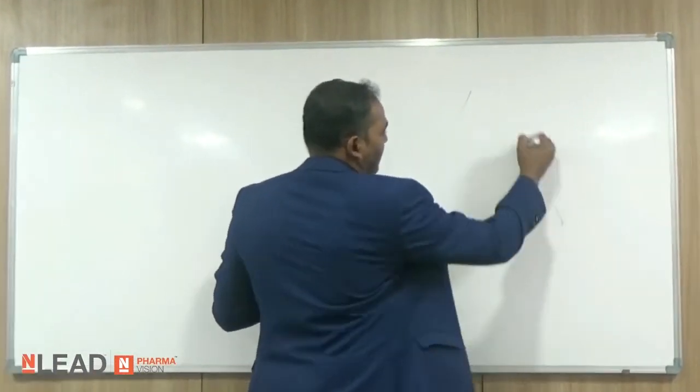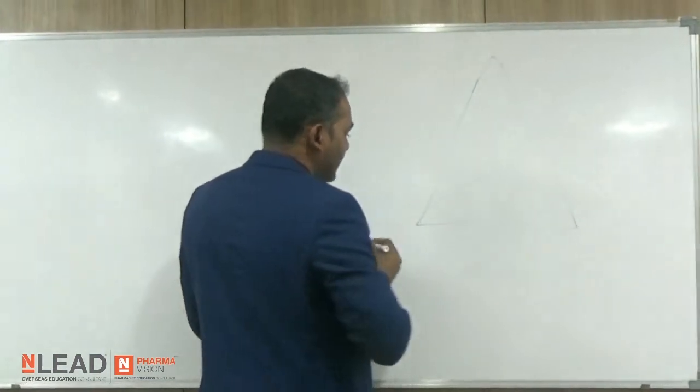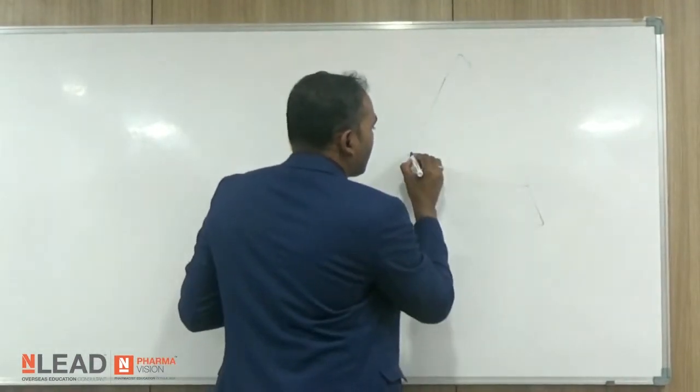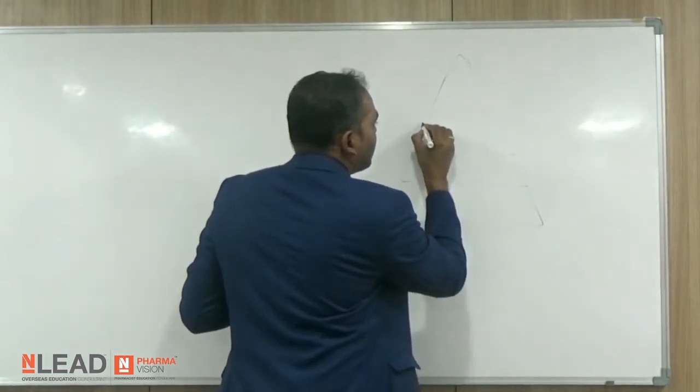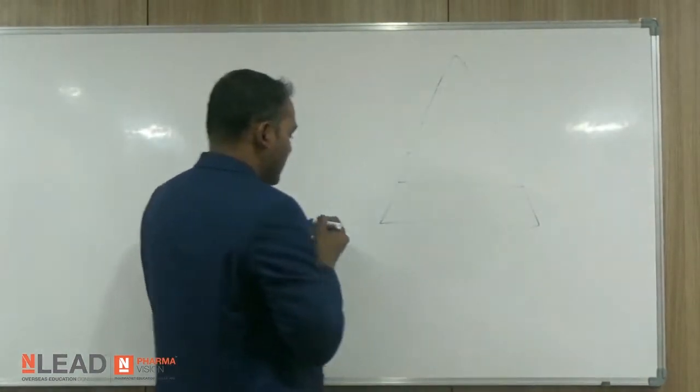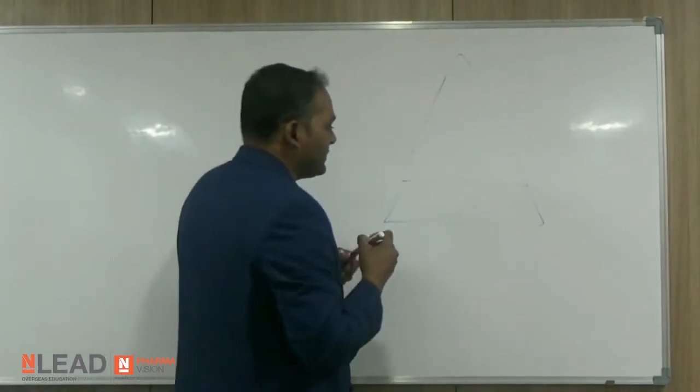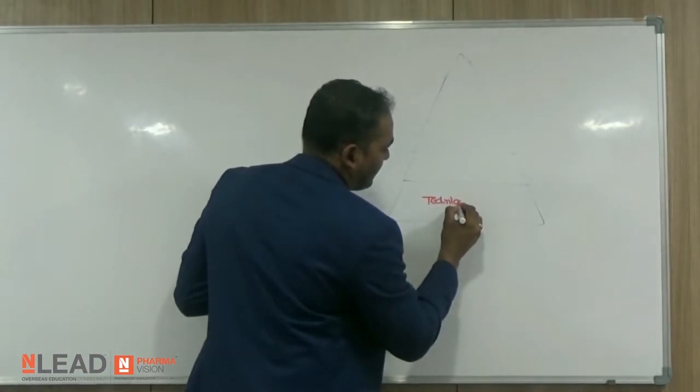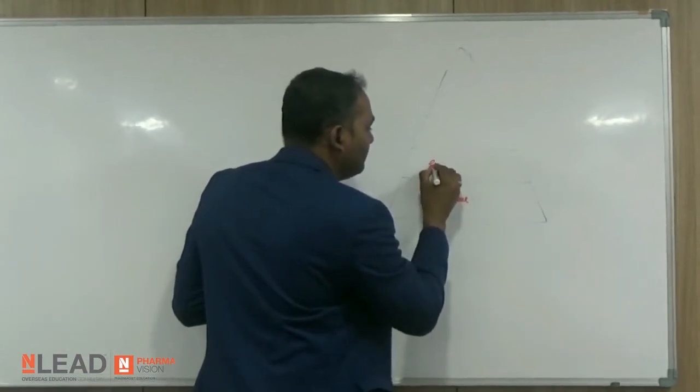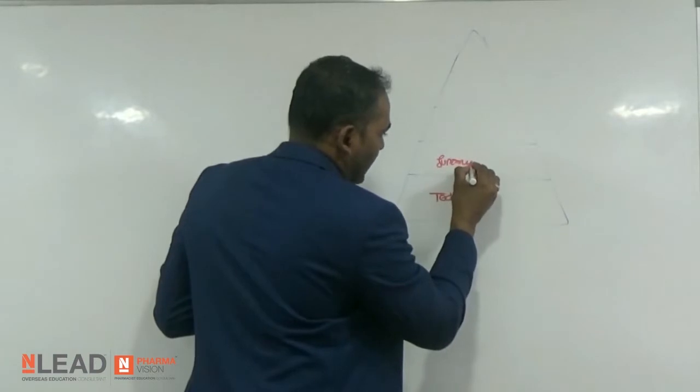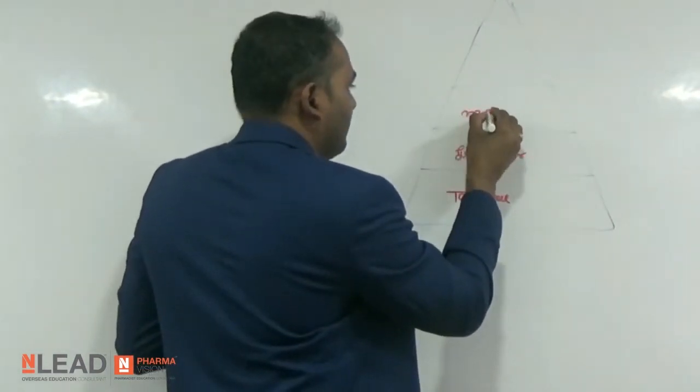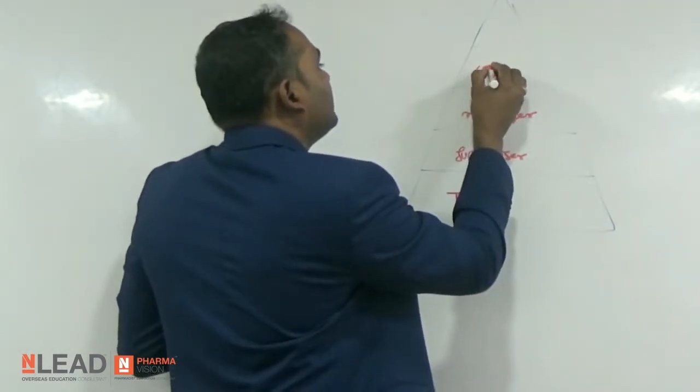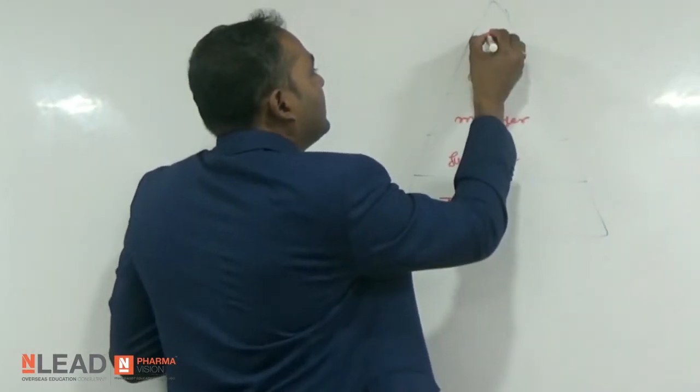The employment pyramid looks like this: the base is big, then the second stage, third stage, and fourth stage. The base represents technicians, then supervisors, managers, general managers, and directors at the top.